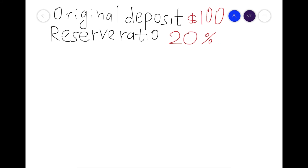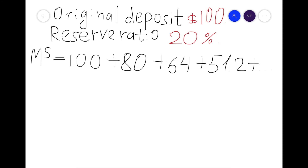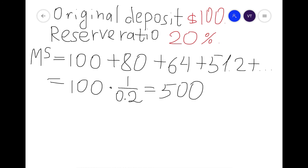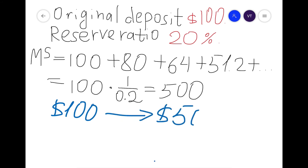So what exactly have we found? We found that the money supply was the infinite sequence, which reduced to 100 × (1/0.2) = 500. The original deposit of $100 created a total money supply of $500 — $100 was the original deposit and $400 was new money created in this economy by banks.